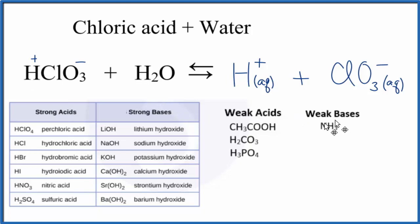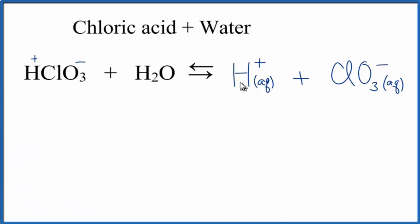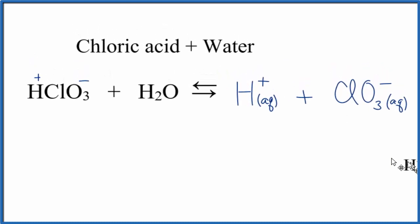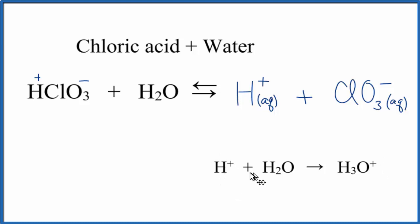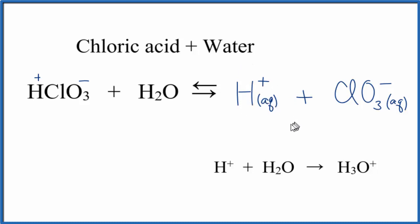One last thing: this H plus is aqueous — it's in water — and it's actually going to join onto a water molecule. The H plus joins with H2O to give you H3O plus. This is called the hydronium ion. Sometimes you'll see this written as H3O plus, and sometimes as H plus. We consider them to be equivalent in chemistry — they're the same thing — but you might see it either way.